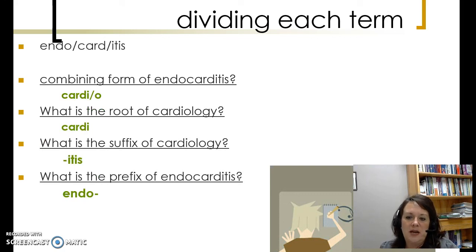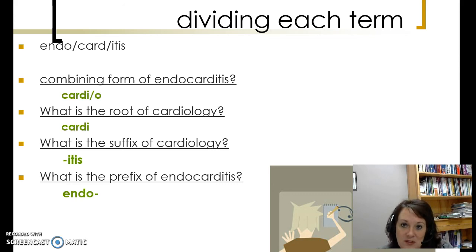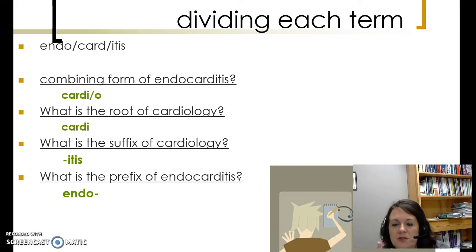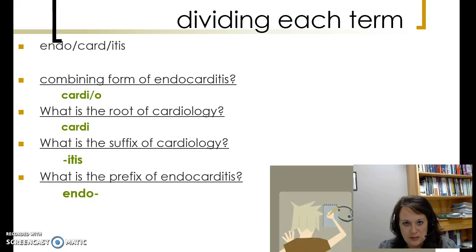Dividing terms up — endocarditis. The combining form is cardi/o, but remember we dropped the O because the suffix -itis starts with a vowel. The root is cardi, the suffix is -itis, and the prefix is endo-. Do you see how we break our terms apart, break them down, and build definitions? That's what medical terminology is about — that's how we're going to do this course.